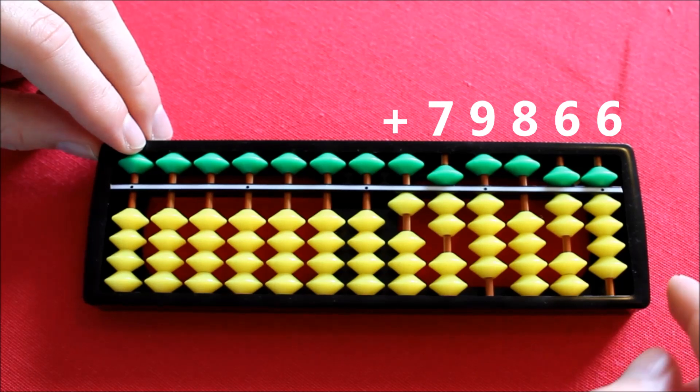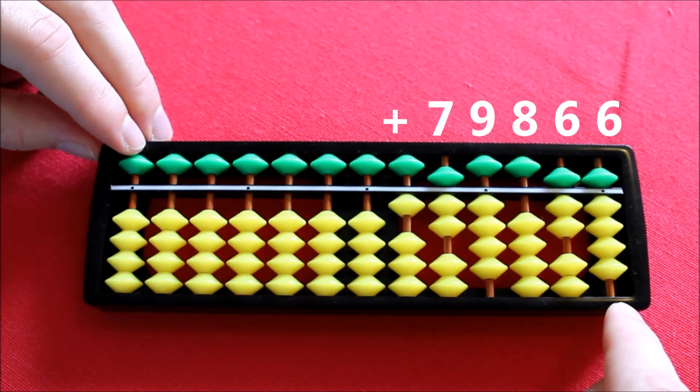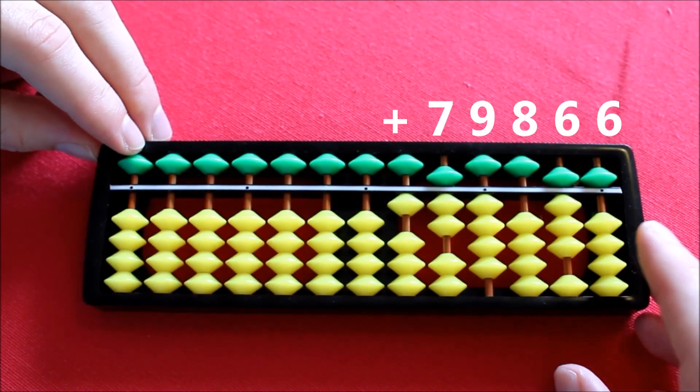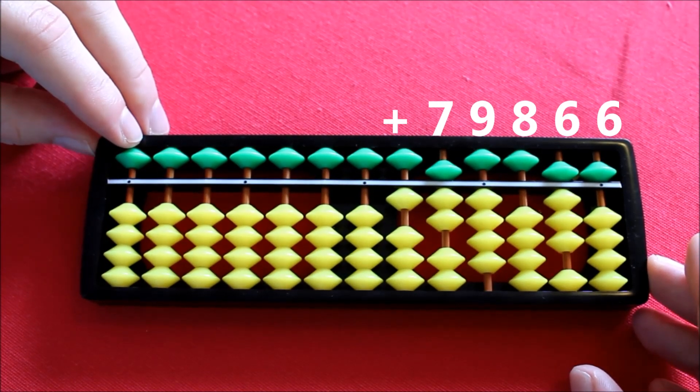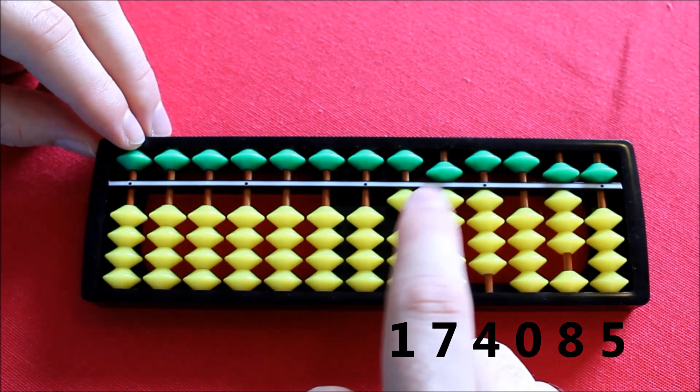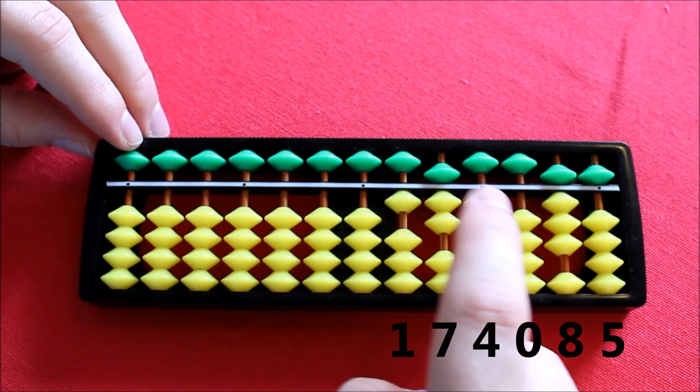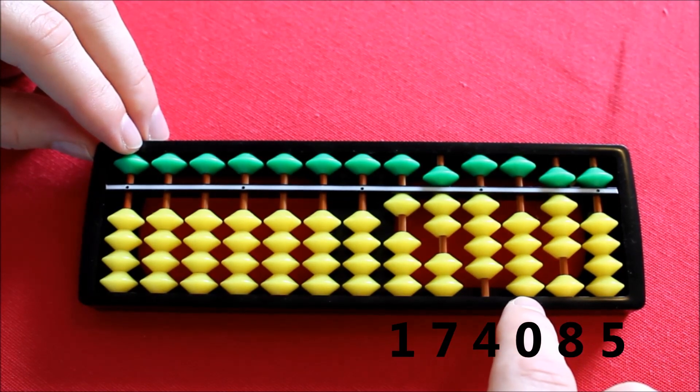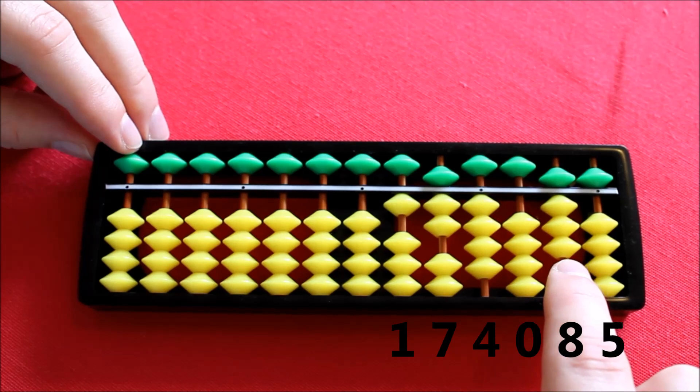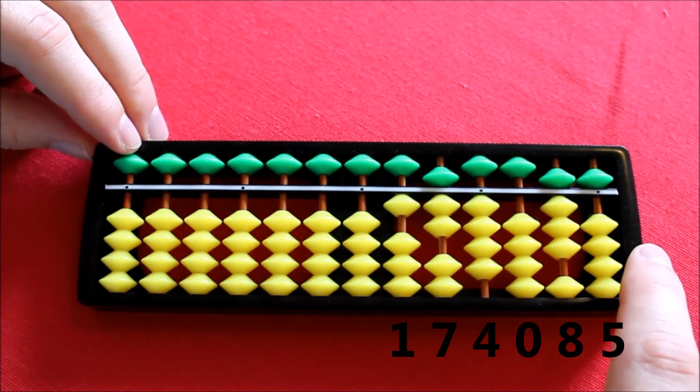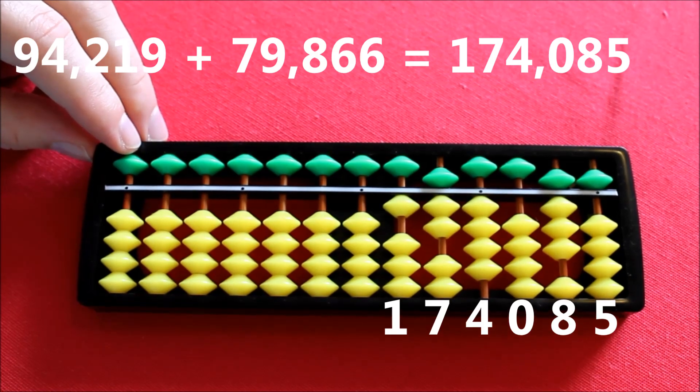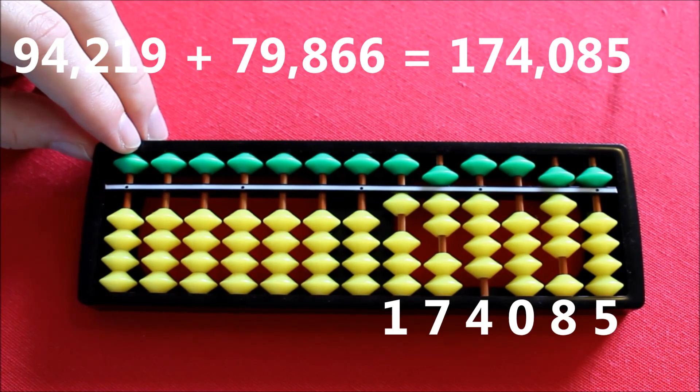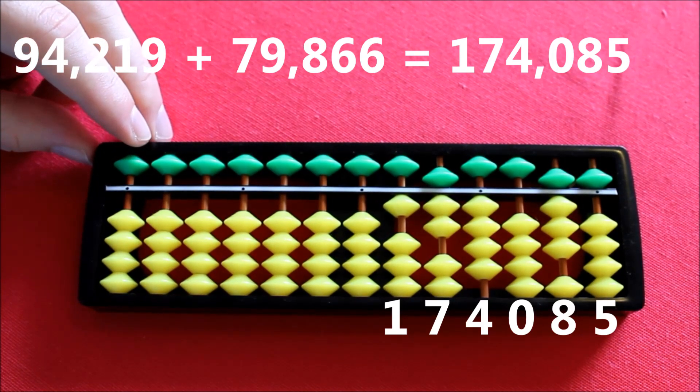Into the last column to add 6 to this. Well, we don't have enough beads. So instead, we firstly subtract 4. Then add 1 to this column for a net result of adding by 6. And what are we left with? Well, we've got a 1 in this column here. We've got 2 and 5 make 7 here. 4 here. We've got nothing here. We've got 3 and 5 make 8 here. And we have 5 here. And so, 94,219 plus 79,866 equals 174,085.